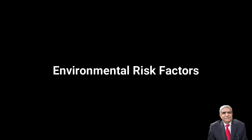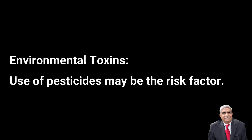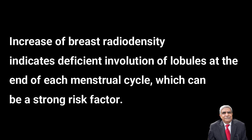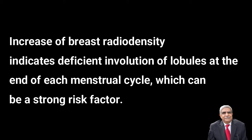The risk is greater if the relative had breast cancer at a younger age or developed bilateral breast cancer. Environmental risk factors include radiation exposure to the chest wall for treatment of lymphoma, atomic bomb exposure, or nuclear plant accidents. Environmental toxins — use of pesticides may be a risk factor. Breast diseases like atypical ductal or lobular hyperplasia or carcinoma in situ increase the risk. Increased breast radio-density indicates deficient involution of lobules at each menstrual cycle and can be a strong risk factor.